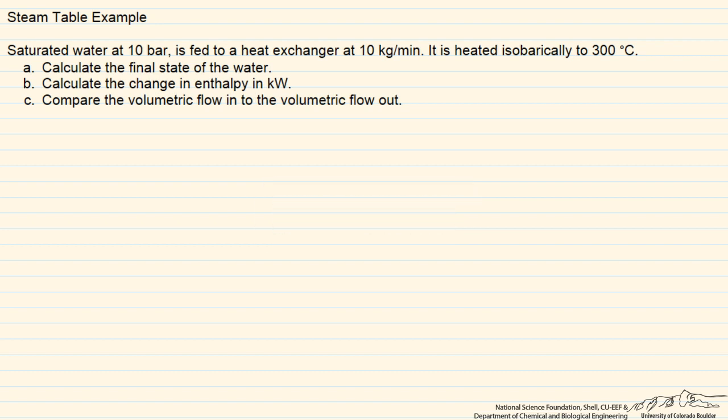Let's draw a picture here. Here's our heat exchanger. What we have coming in is saturated water at 10 kilograms per minute and at 10 bar. Coming out we have H₂O at 300 degrees C and 10 bar.